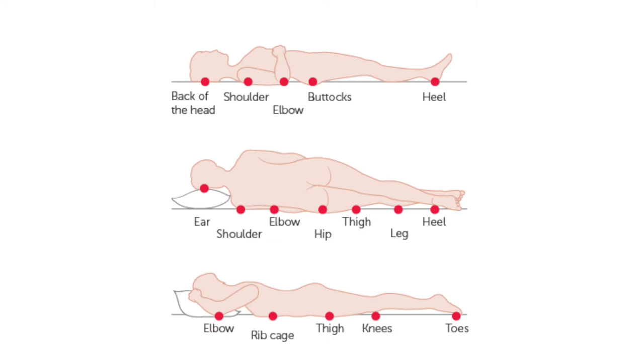Pressure ulcers are most likely to occur over bony areas, most often over the heels, sacrum, shoulders or elbows. However, any area of skin exposed to continuous pressure will eventually show signs of pressure ulceration.